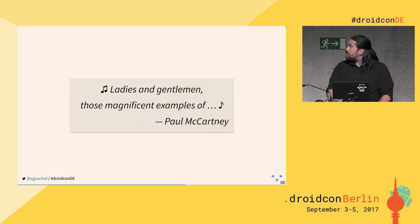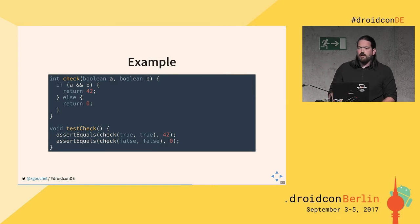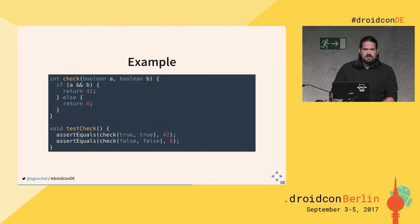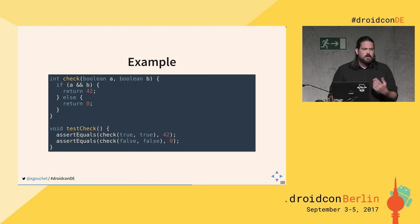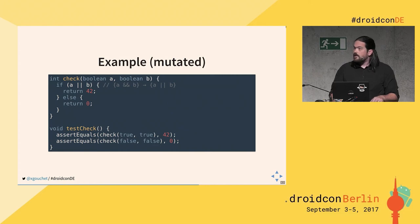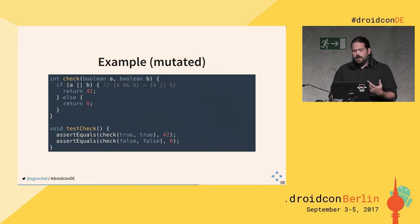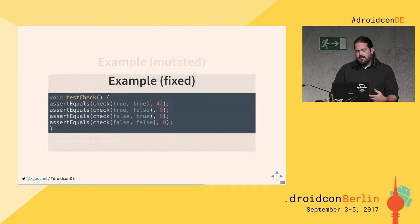Here's a quick example of mutation testing in action. Say you have a method taking two booleans A and B, returning 42 when both are true and zero otherwise. Your tests check: check(true, true) equals 42, and check(false, false) equals zero. Something is clearly missing. When you run the mutation, A AND B gets changed to A OR B — and your tests are still green, because true AND true is still true and false is still false. To fix this, you just need to add a few more cases to cover all the ground.